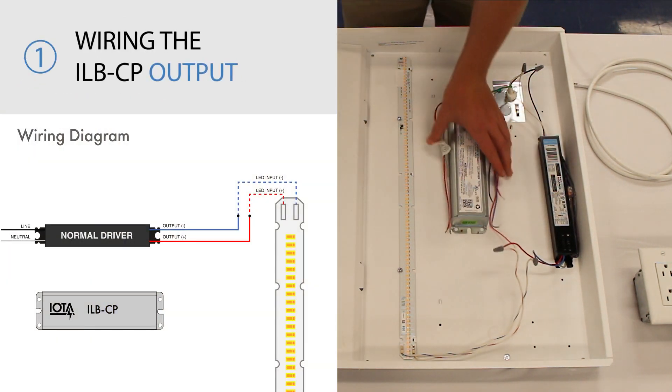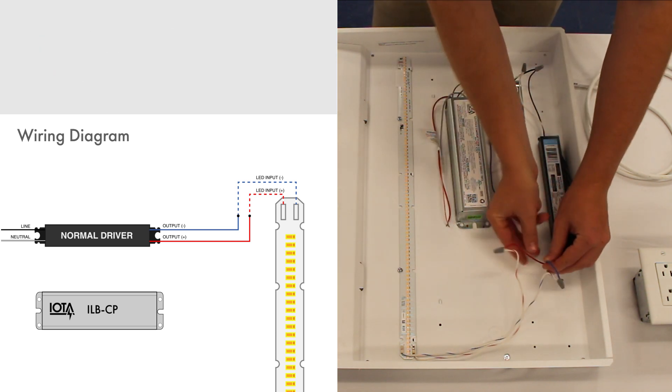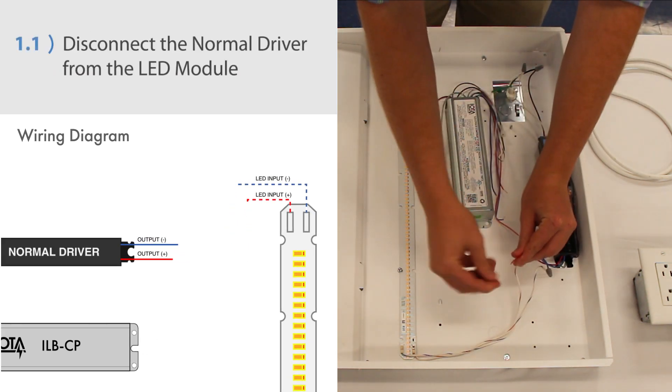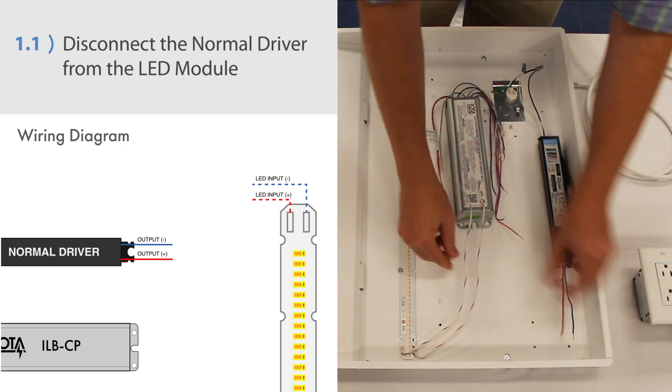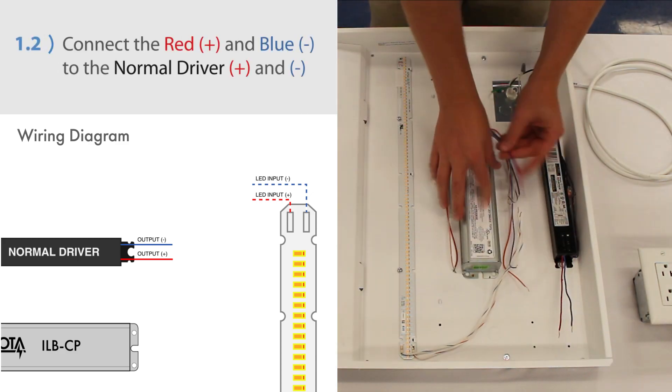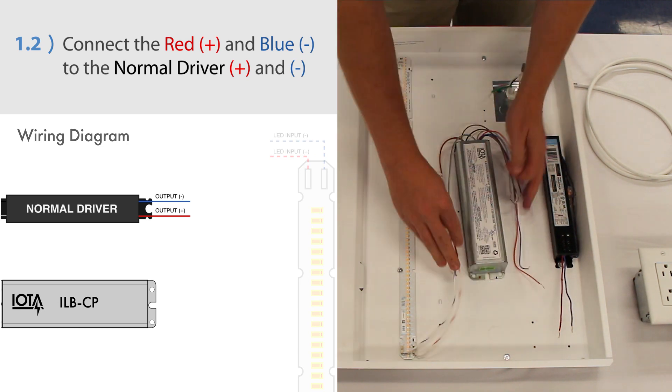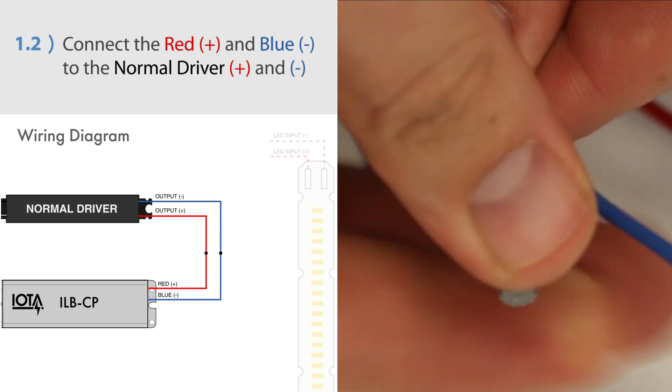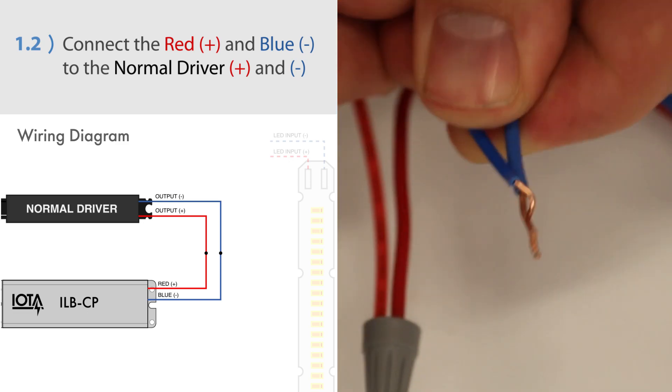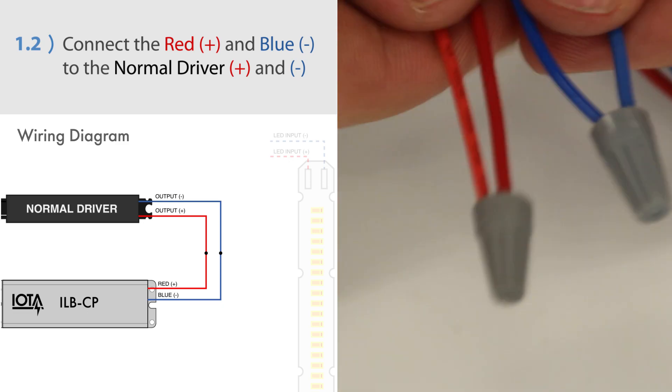The first step will be to wire the output. First, disconnect the leads connecting the normal driver to the LED module. Then, connect the red positive and blue negative wires from the ILB-CP to the positive and negative output wires of the normal driver. Be sure to observe polarity.